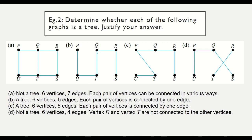Diagram C also has six vertices and five edges — one, two, three, four, five — each pair of vertices connected by one edge only, so this is correct: Diagram C is a tree.